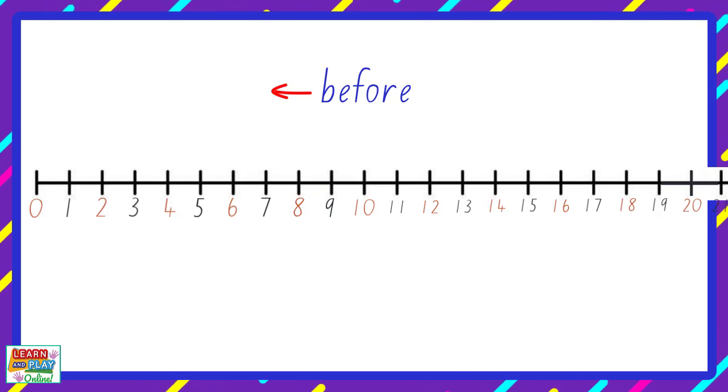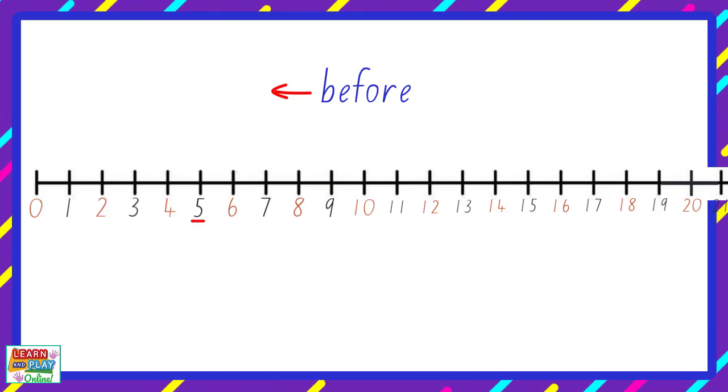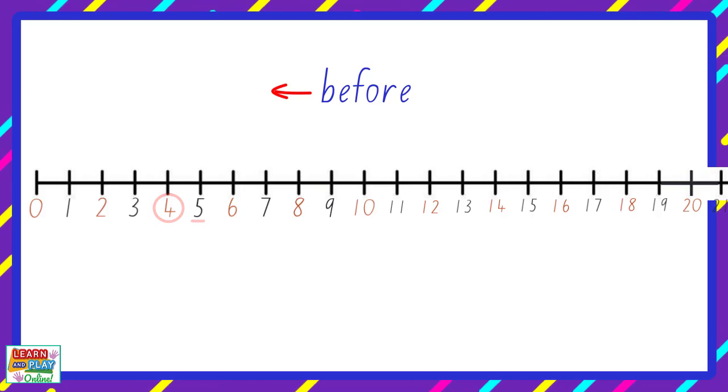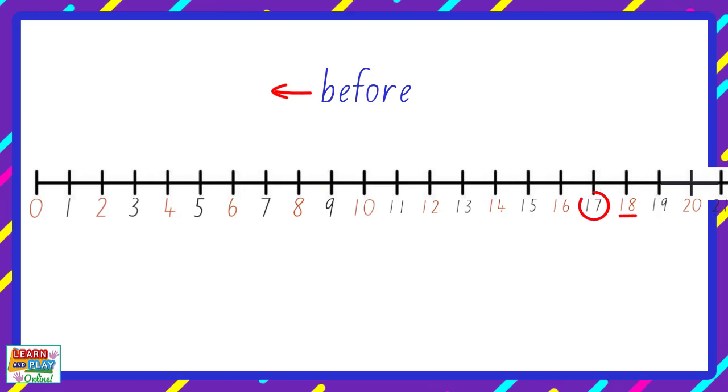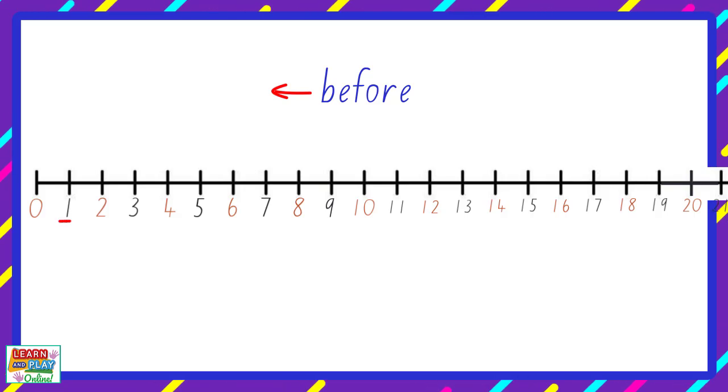Using the number line, what number comes before the number 5? 4. What is the number that comes before 18? 17. What number comes before the number 1? 0.